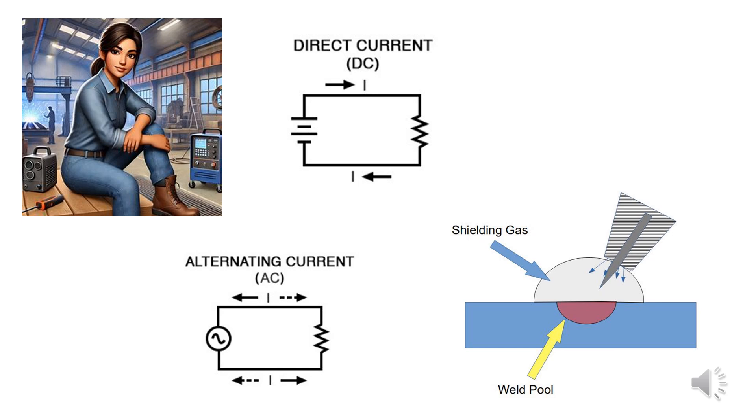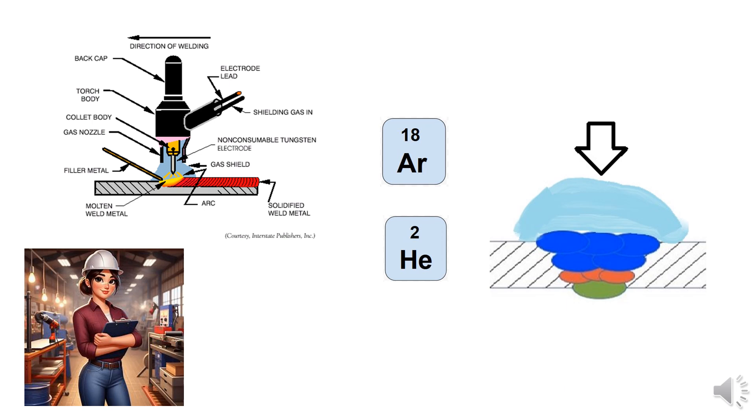Power sources for GTAW are equipped with solenoid valves to control the flow of shielding gas and cooling water, enabling precise operation. These valves turn the shielding gas and cooling water on and off as needed. A remote control switch, which may be manually operated or activated via a foot pedal, controls these systems and can also activate or deactivate the welding current. This setup allows the operator to control the entire process from the workstation, adjusting the current as needed during welding without interruption. Most GTAW power sources provide both alternating AC and direct current DC, allowing flexibility based on the welding requirements.